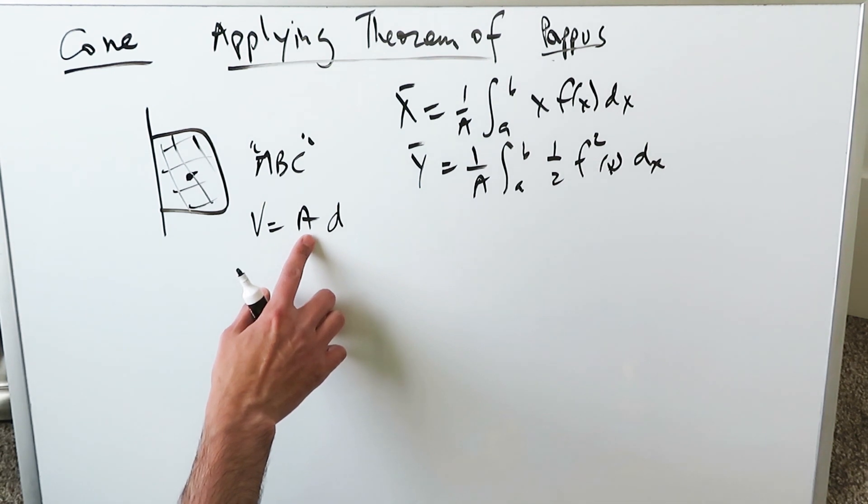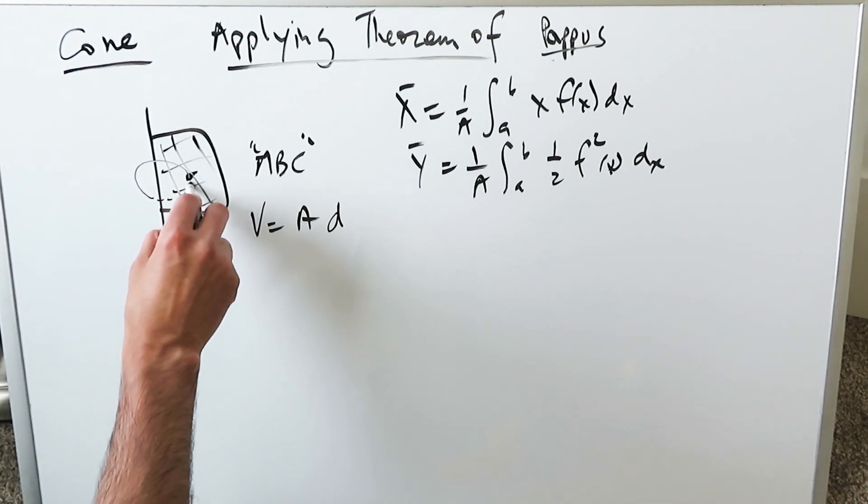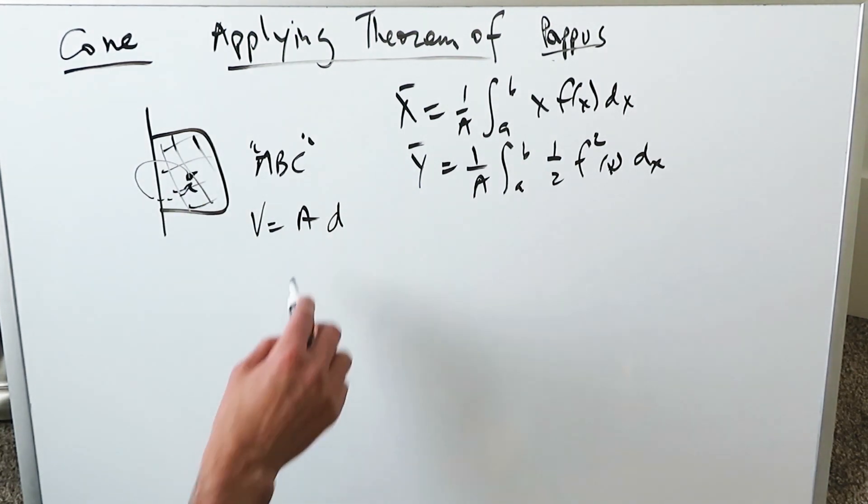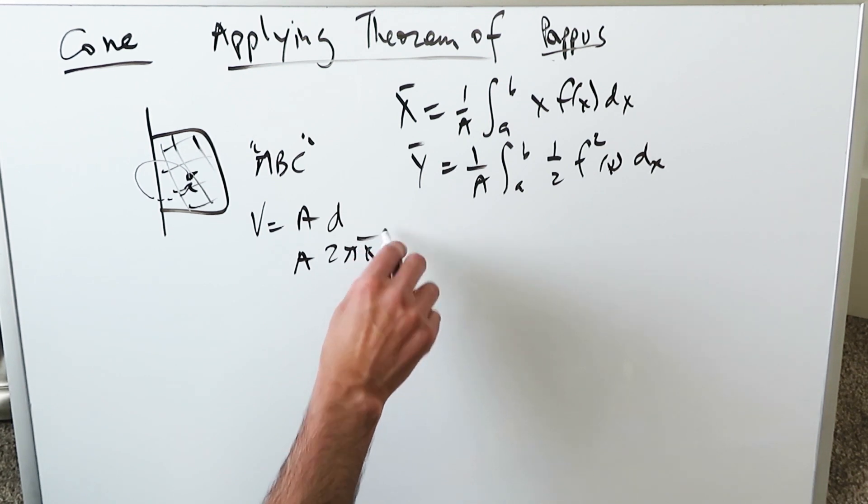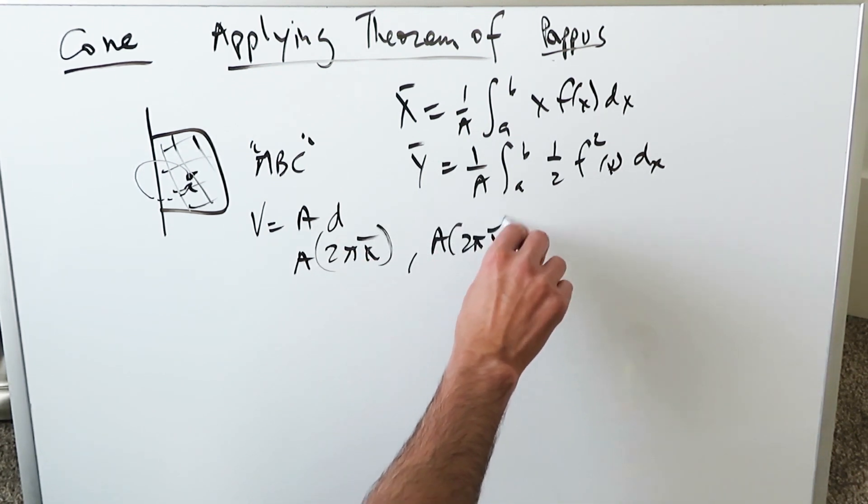The volume here is equal to the area, which you see, the shaded region, times the distance the centroid is traveling by means of a single revolution. It can be A times 2π times the x value, or it can be A times 2π times the y value.